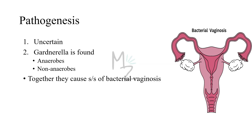Pathogenesis: The pathogenesis of bacterial vaginosis is uncertain, but Gardnerella vaginalis is often found in association with anaerobes such as Mobiluncus and Prevotella, and non-anaerobes such as Mycoplasma hominis and Ureaplasma urealyticum. Together, they cause the signs and symptoms of bacterial vaginosis. The infection occurs in the vagina — you can see the female reproductive system here with the ovary, fallopian tube, uterus, cervix, and vagina.